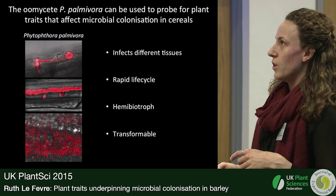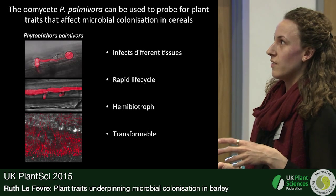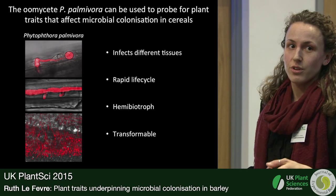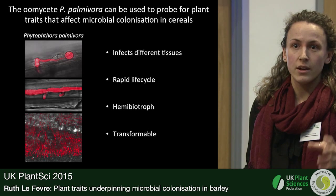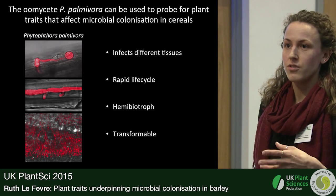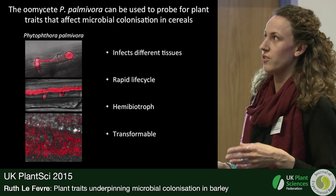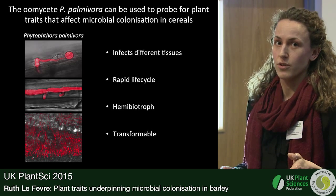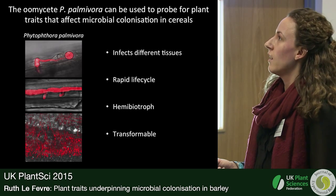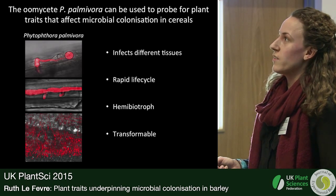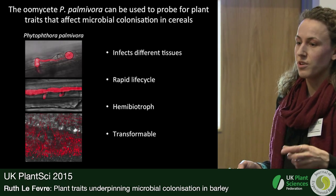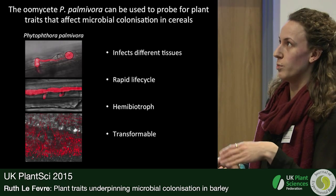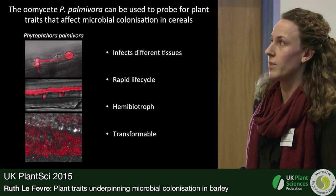It has a really rapid life cycle, so you can do assays in the lab within a week. It's a hemibiotroph, so it shares many of the same lifestyle characteristics as the pathogens that are economically relevant to wheat and barley in the UK. We think this means it will help us identify traits in plants that will be relevant for these pathogens.